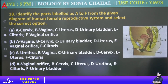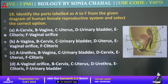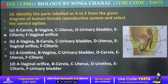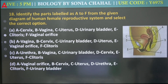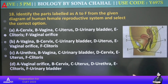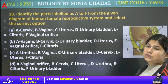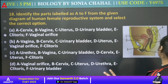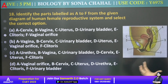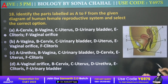Next: Identify the parts labeled A to F from the given diagram of the human female reproductive system and select the correct option. If we get this right, by God, after doing this much, nothing should be left — nothing should be left.